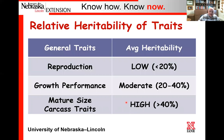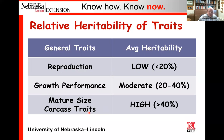Relative to heritability—the percentage of differences between two animals that are actually genetic and can be passed on to the next generation—reproduction is lowly heritable. There's not a lot of pregnancy rate variation that's actually heritable; it's highly influenced by environment, so progress through selection is slow. In contrast, heritability for carcass traits—ribeye area, marbling, etc.—is extremely high, and we can make very fast progress changing carcass merit through selection.